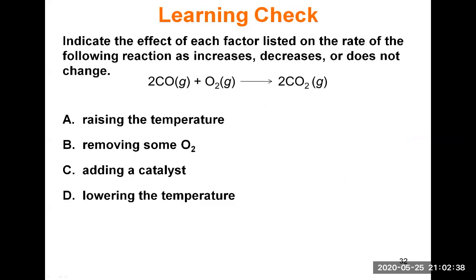For a specific learning check, consider the reaction: 2CO + O₂ → 2CO₂ — carbon monoxide reacting with oxygen to make carbon dioxide. If we raise the temperature, the reaction rate increases, because higher temperature gives molecules more energy and a greater chance to overcome the activation energy, reach the transition state, and become product.